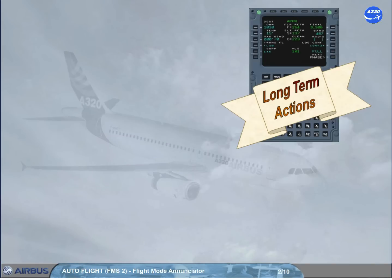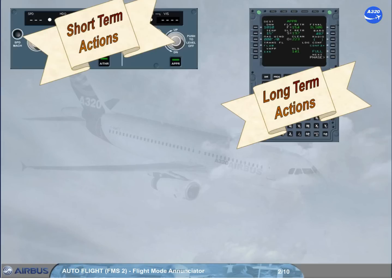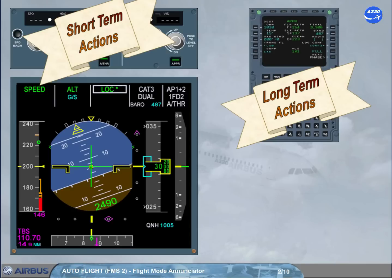Long-term actions through the MCDU and short-term actions through the FCU must be cross-checked on the Flight Mode Annunciator, FMA, located at the top of the PFD, as well as on the various scales of the PFD.